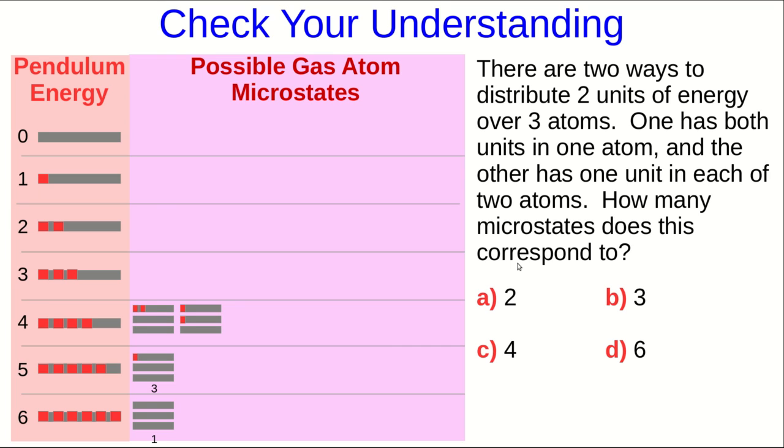I hope you saw how to do this. Again, with the case where one atom has two units of energy, there are three ways for that to happen. Either the first atom, the second atom, or the third atom has those two units of energy.